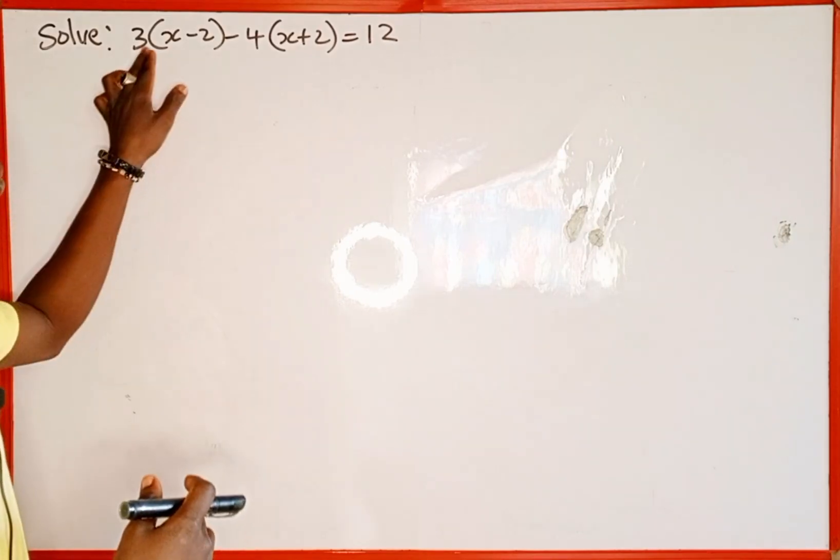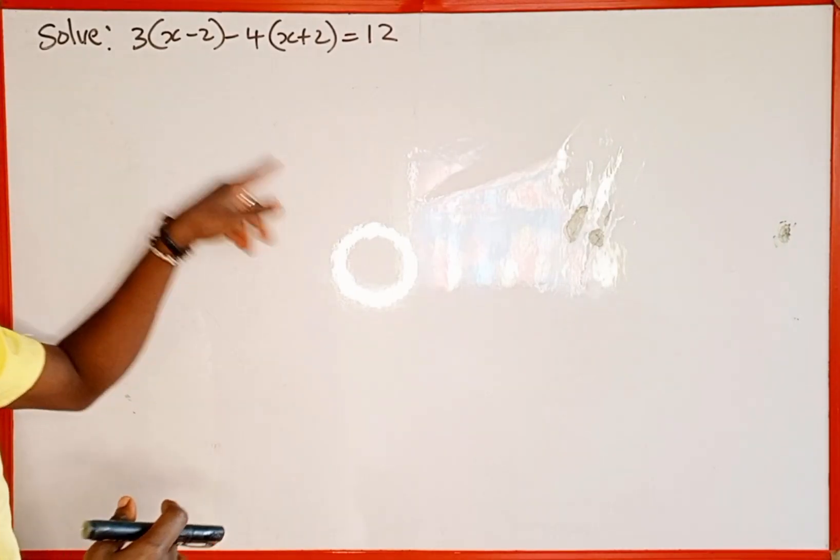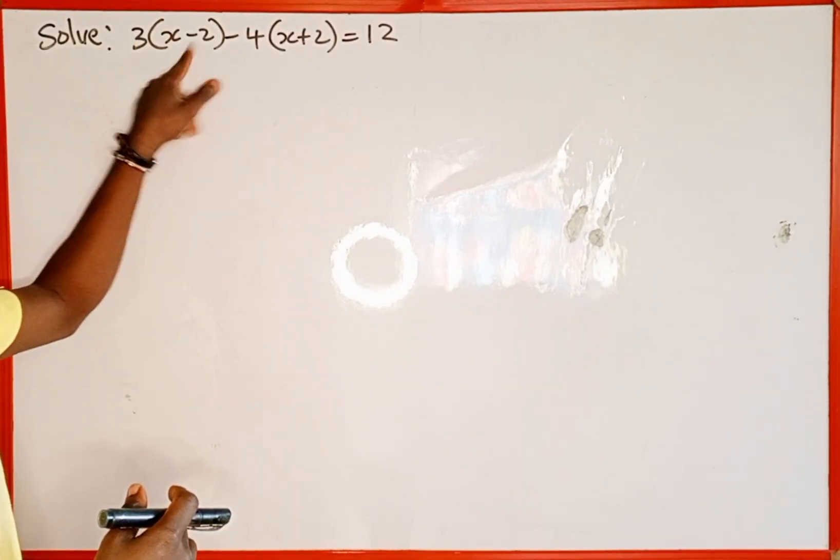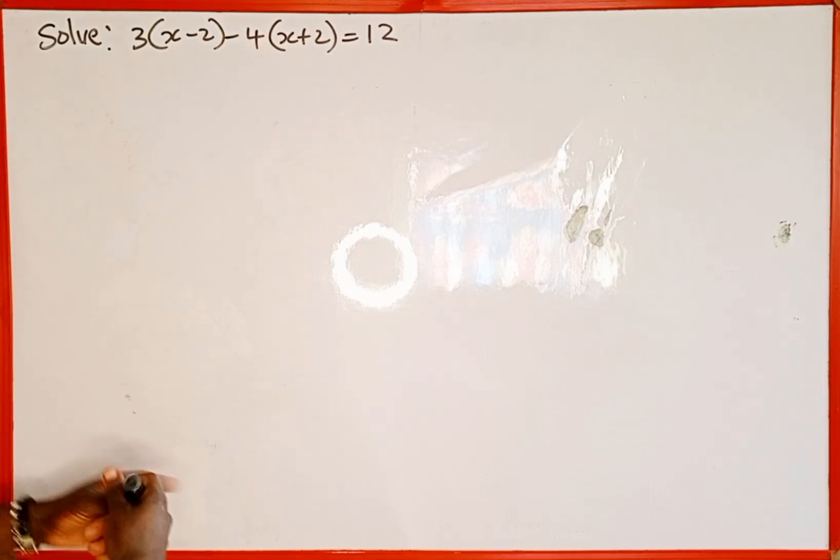The first thing we're going to do is to remove this bracket by distributing this 3 to the bracket. Also we distribute negative 4 to the bracket.